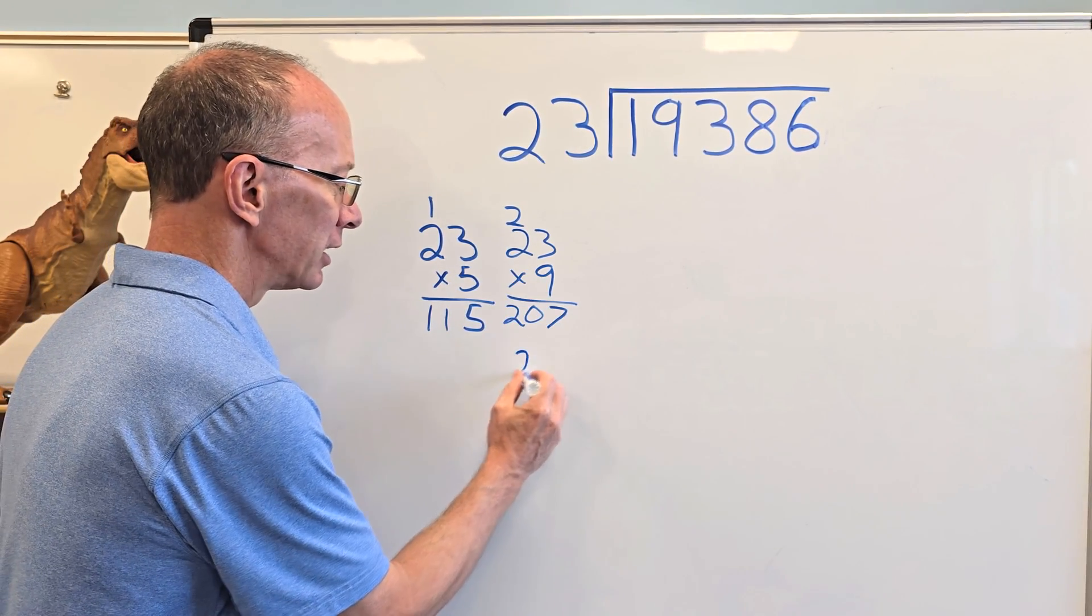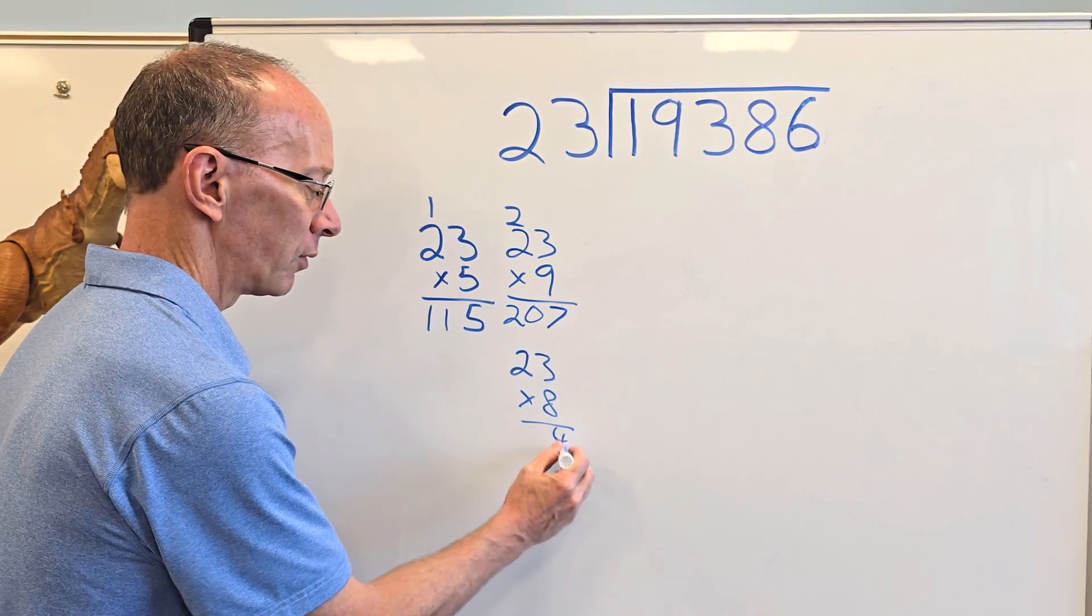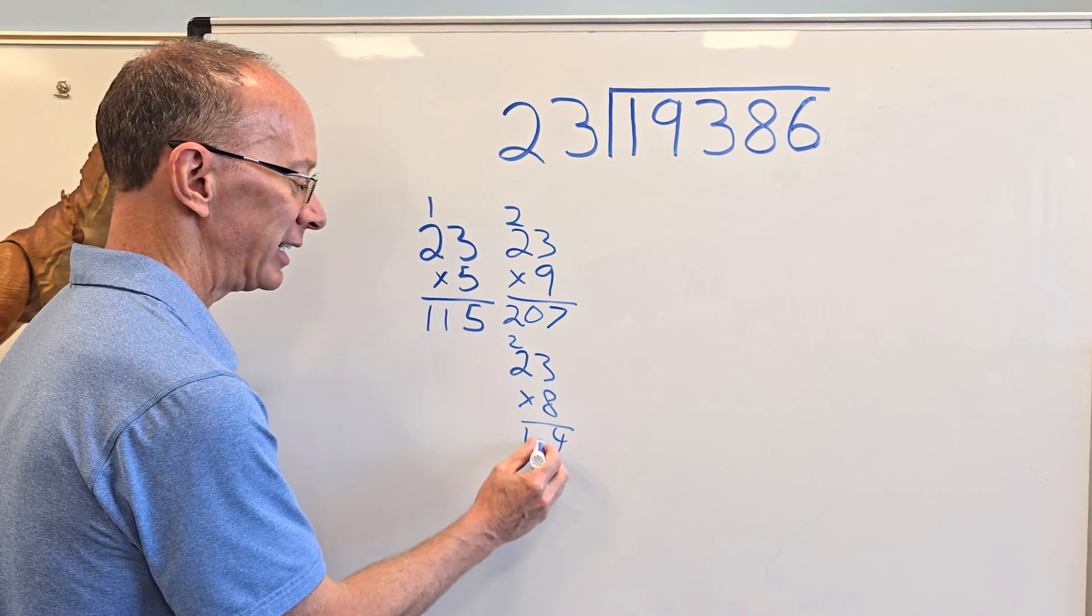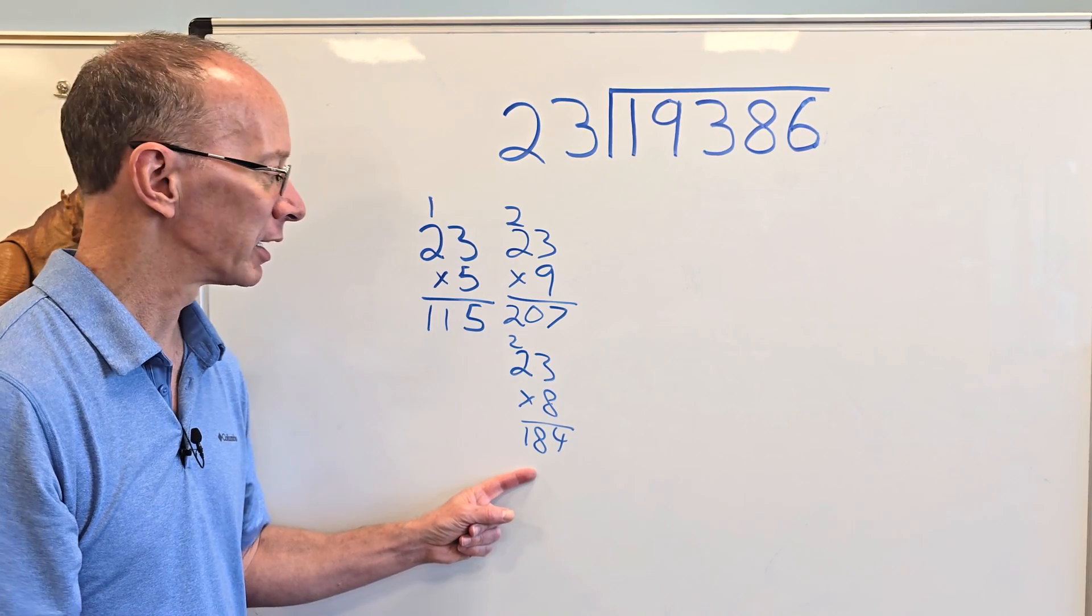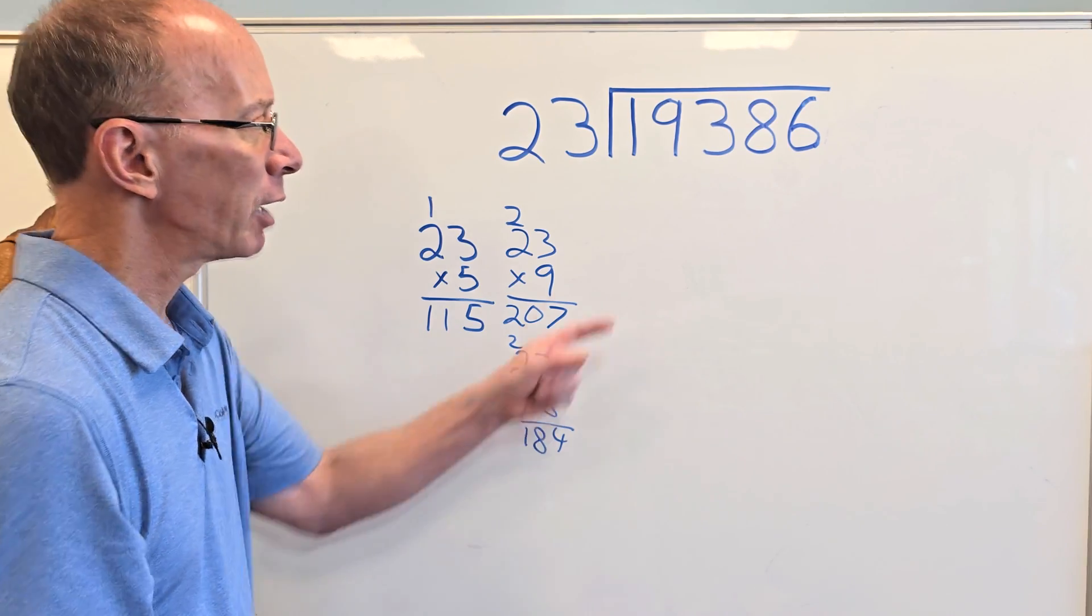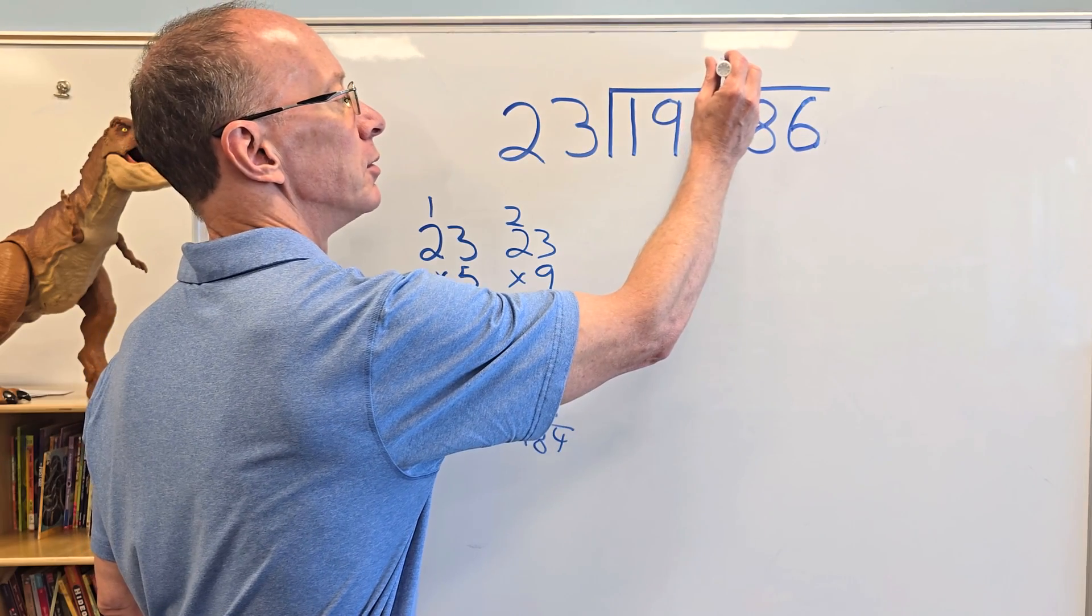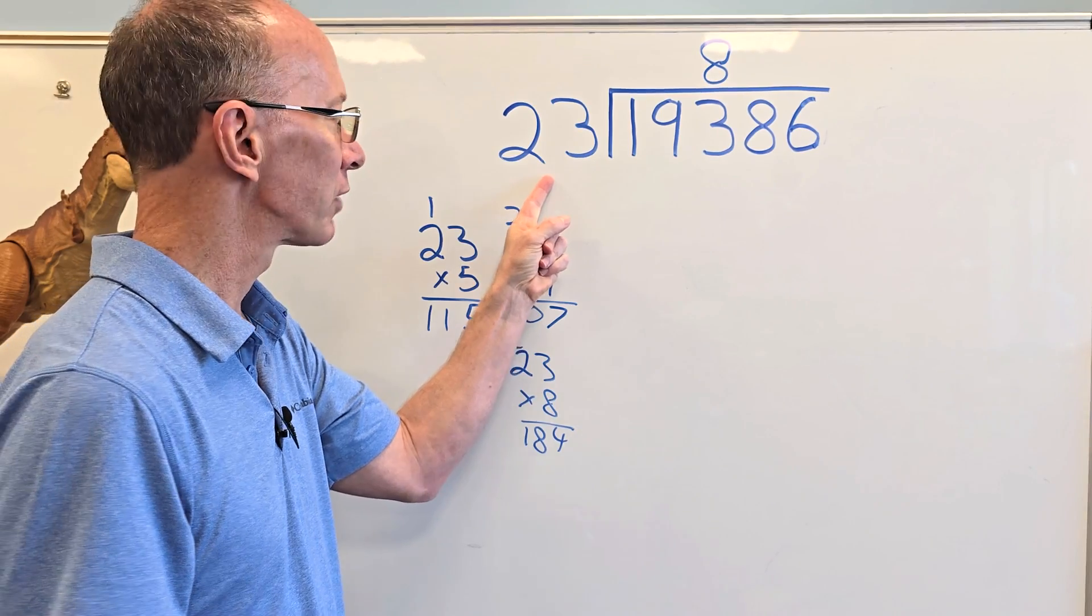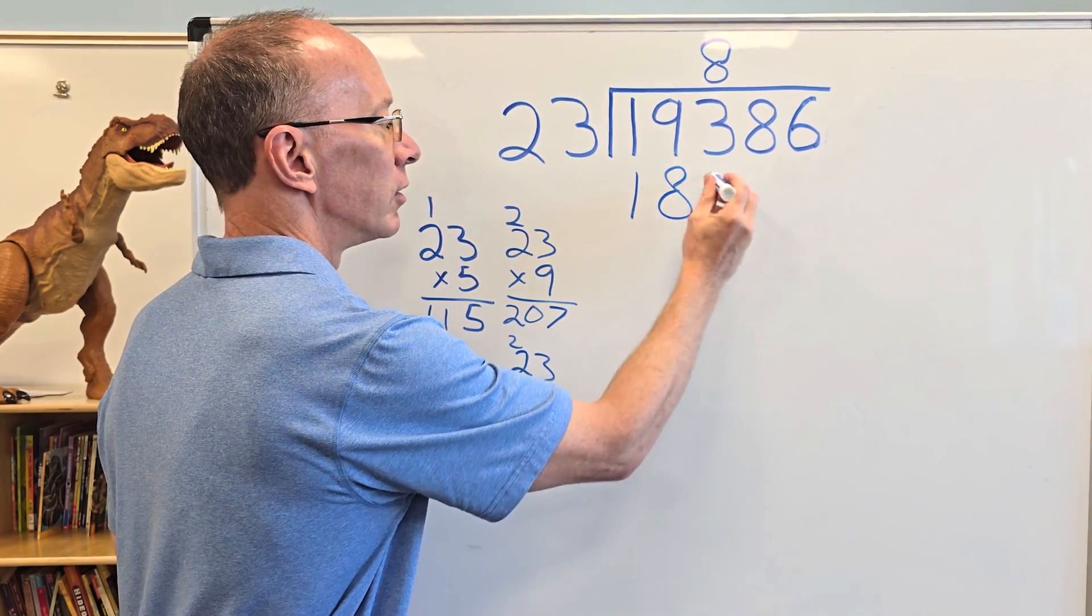So let's try 23 times eight. Eight times three is 24. Carry the two. Two and eight is 16. 17, 18. I think that's the one right there because if I went one higher, it's 207. So it's going to be 23 times eight. I put the eight right above the three right here. I'm going to write number eight right there.